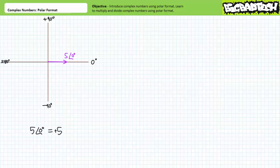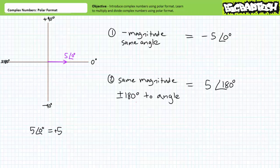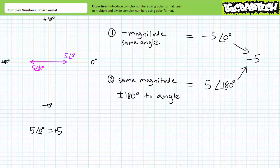Now let's examine negation of complex numbers using polar format. If we were to negate 5 at an angle of 0, we have two options: first, multiply the magnitude by negative 1 and keep the angle the same; or second, keep the magnitude the same and add or subtract 180 degrees to the angle. Using the first method yields negative 5 at an angle of 0 degrees. Using the second method gives 5 at an angle of 180 degrees. The preferred means when using polar format is 5 at an angle of 180 degrees, since it makes it obvious we're dealing with an equal magnitude pointed in the opposite direction. Either way, you can also just express it as plain old negative 5 — don't forget normal math.